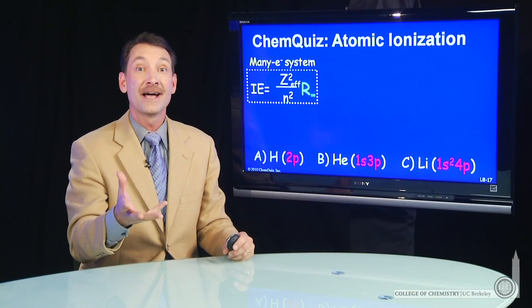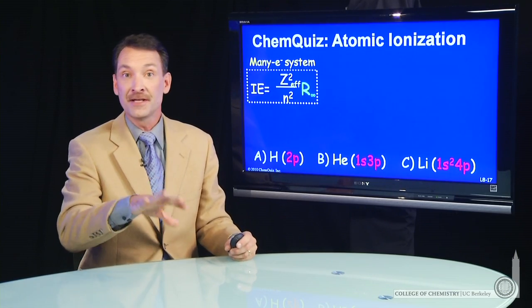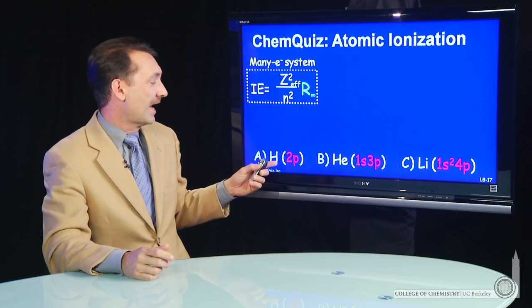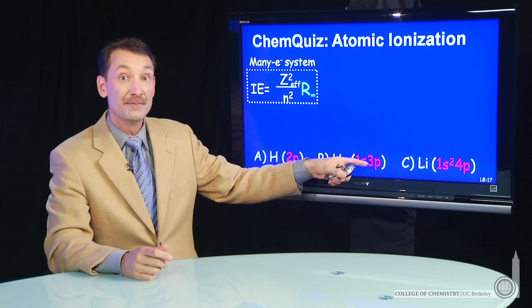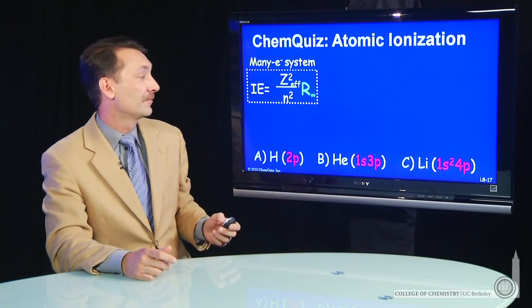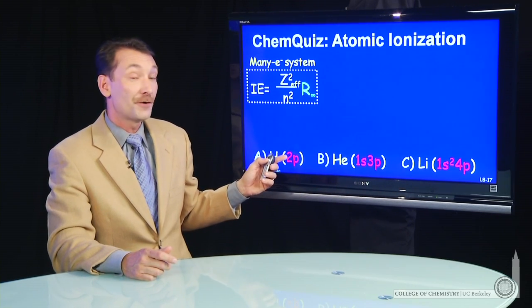We're talking about ionizing three atoms. Each of the atoms is in a slightly excited state. So we have hydrogen in the 2p state, helium in the 3p state, and lithium in a 4p state. So we've talked about this already.